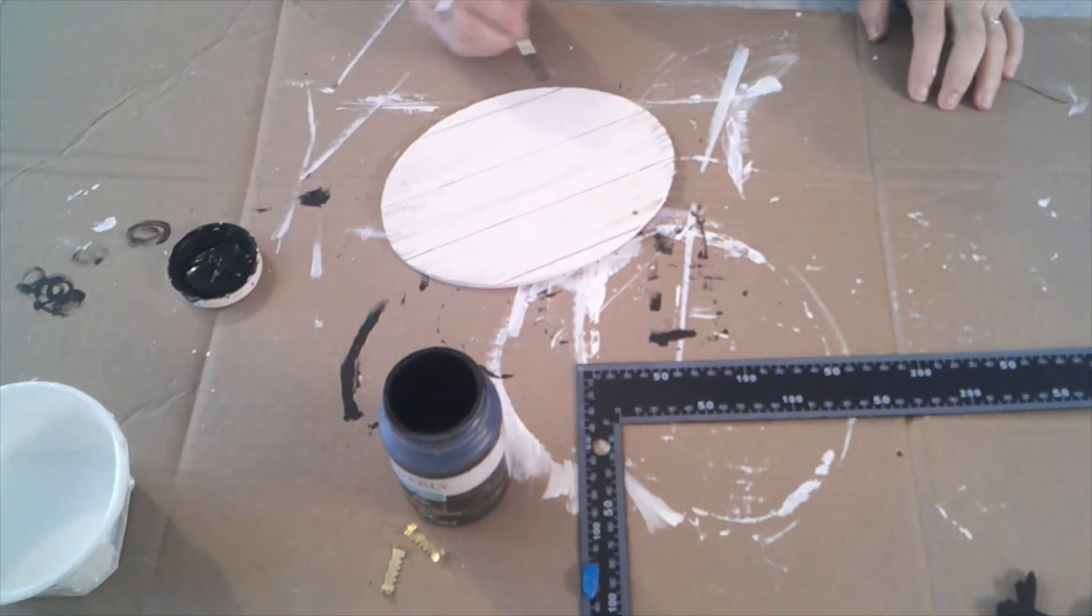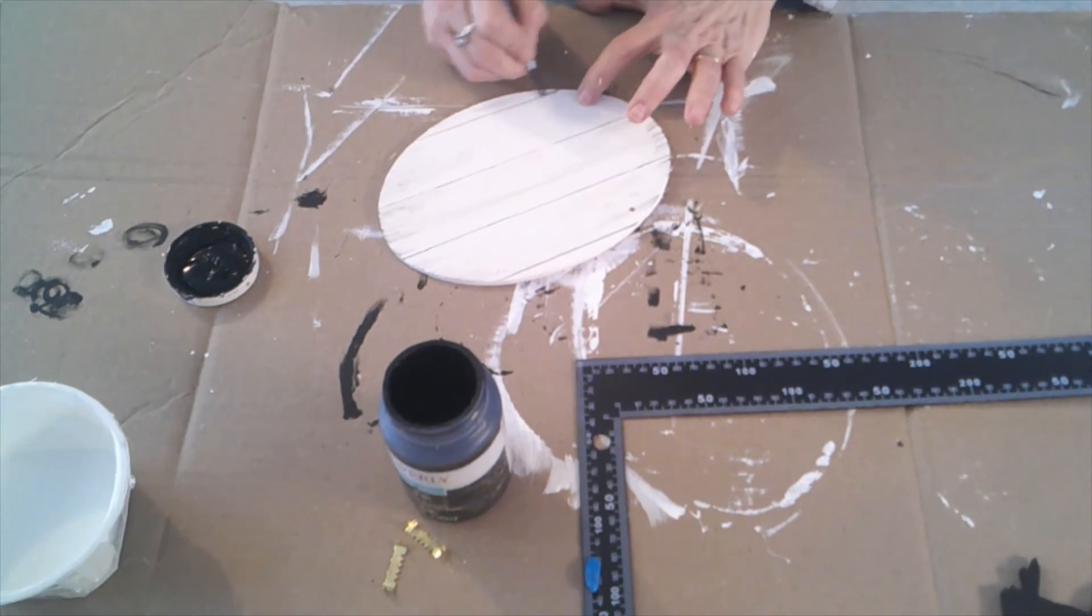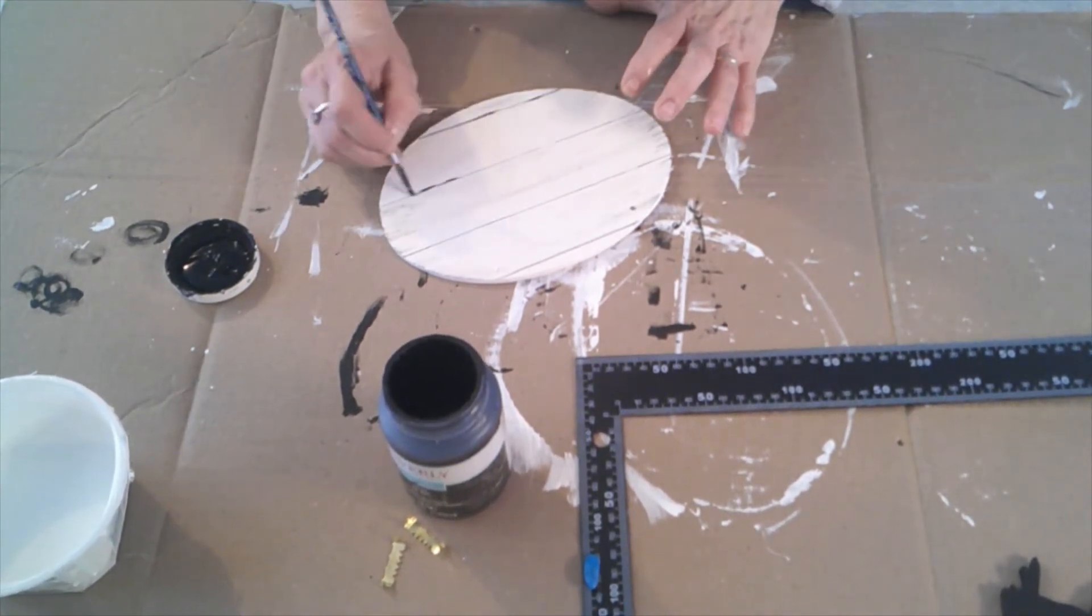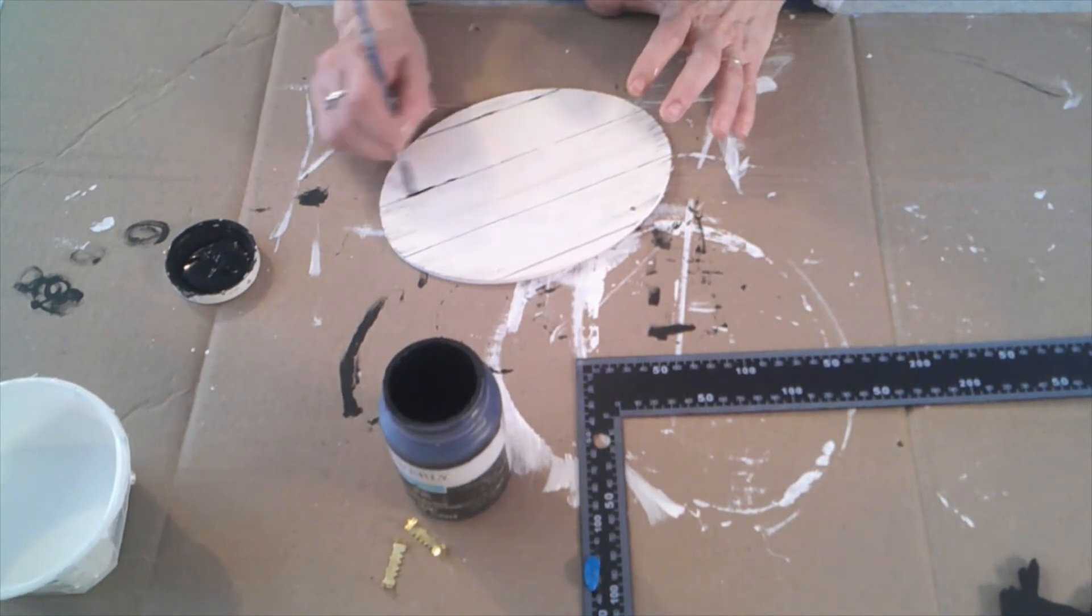Once those lines were all drawn out and it was dry I went over it with ink colored chalk paint from Waverly. I wanted it to look a little bit weathered. I went over that entire surface just using a dry brush technique.